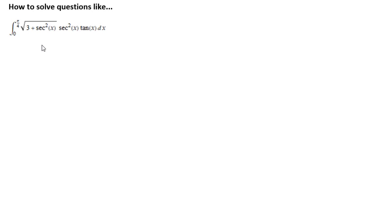In this episode of how to solve questions like, we will solve an integral, a definite integral. It is the product of three terms. The first term is the square root of 3 plus secant square x times secant square x times tan x dx over the interval 0 to pi by 4.